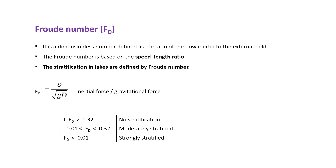The next formula is related to the Froude number, which is mainly related to the stratification of lakes — it gives an idea about the stratification of lakes. The formula is: Fd = V divided by √(G·d), representing inertial force divided by gravitational force. If the Froude number is greater than 0.32, there is no stratification. If it is between 0.01 and 0.32, there is moderate stratification. If it is less than 0.01, there is strong stratification in the lake.